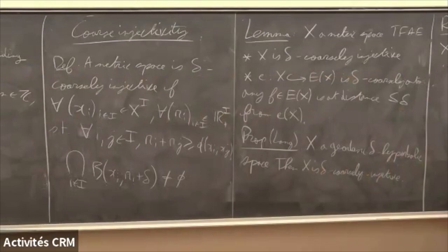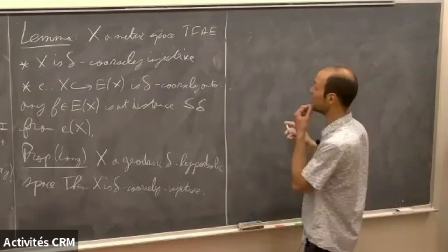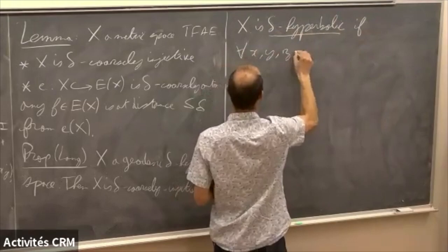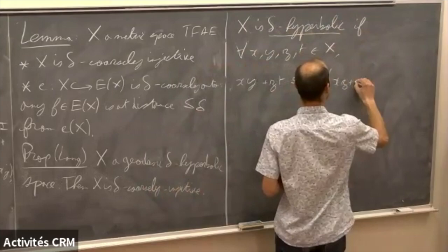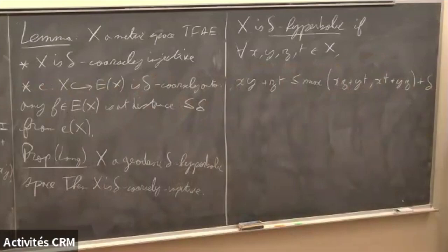So recall that X is Delta-hyperbolic if for any four points x, y, z, t in X: xy + zt ≥ max(xz + yt, yz + xt) − Delta, where I write xy in place of d(x,y) to have a formula easier to read. It's the four-point condition. Knowing this, I can now give a proof of Lang's result, which will go in two steps. The first step is showing that the injective hull of a hyperbolic space is itself hyperbolic — this part does not use that X is geodesic.